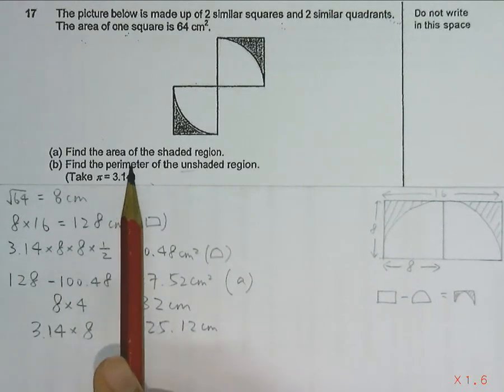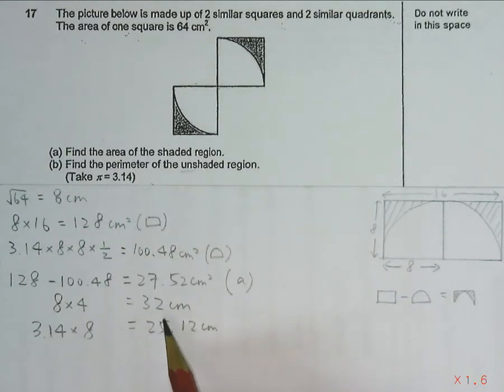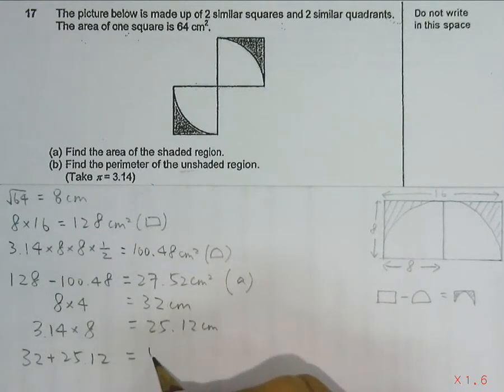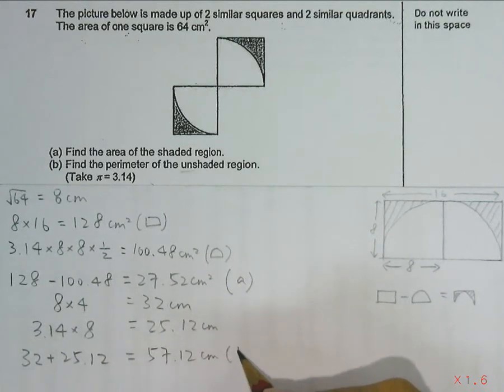So the total perimeter of the unshaded region we can find by adding these two together. So 32 plus 25.12 cm, which will give us the answer of 57.12 cm. This will be your answer for Part B.